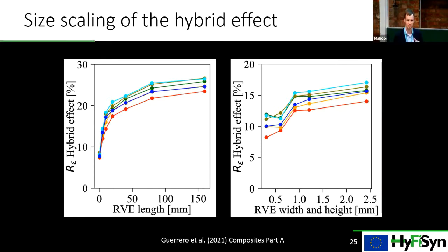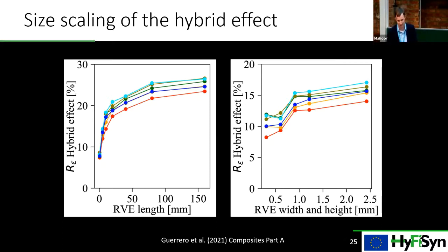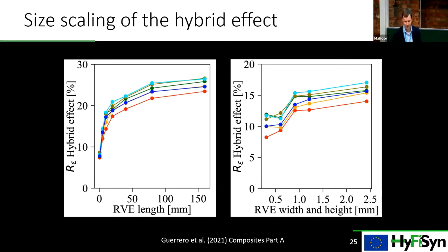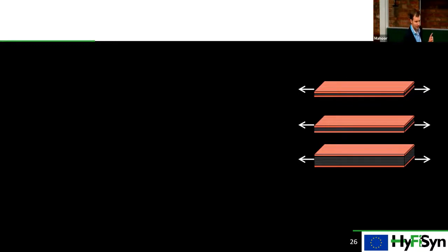Regarding size scaling: in all these models we model really tiny composites — a few millimeters long, a few thousand to ten thousand fibers. But size scaling is an intrinsic part of hybrid effects, and one group has recently studied how hybrid effects size-scale, finding that the larger the composite becomes, the larger the hybrid effect becomes. This suggests our models may be underestimating the hybrid effect, though I'm still a little tentative about whether these models fully capture size scaling properly.